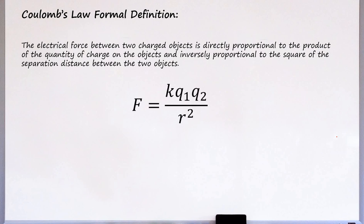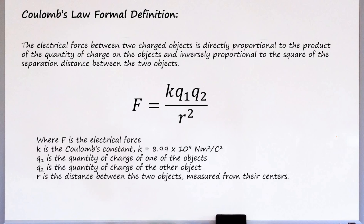F equals k q1 q2 over r squared, where F is the electrical force, k is the Coulomb's constant, 8.99 times 10 to the 9 newton meters squared per coulomb squared. Don't worry about the units - the units are just there to cancel things out and leave out newtons, because the unit of force is always newtons. Doesn't matter what kind of force that is - electrical force, gravitational force - the unit of force is always newtons. q1 is the quantity of charge of one of the objects, q2 is the quantity of charge of the other object, and r is the distance between the two objects measured from their centers. Now you're ready to solve problems involving this formula. Thank you.